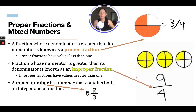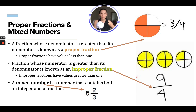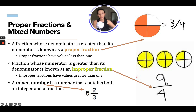So proper fractions and mixed numbers. A fraction whose denominator is greater than its numerator is known as a proper fraction. So three fourths is a proper fraction because it's three out of four — it's showing a fraction. Now a fraction whose numerator is greater than its denominator is known as an improper fraction. For example, nine fourths is an improper fraction because four goes into nine twice, so nine fourths would be equal to two and one fourth.